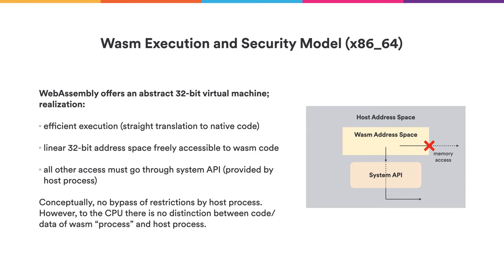Let's now have a look at WebAssembly, its execution and security model. WebAssembly offers a 32-bit abstract virtual machine and is a popular choice for allowing safe execution of foreign code on target systems. Looking at typical technical realizations on 64-bit hosts, the logical linear 32-bit address space of the WebAssembly process is embedded into the larger 64-bit address space of the host process. The WebAssembly instructions are translated to native code — a very efficient translation — which also ensures that WebAssembly code can never perform out-of-bounds accesses relative to its own 32-bit address space. Any access to the host process or external entities must be mediated through a system API completely under control of the host process.